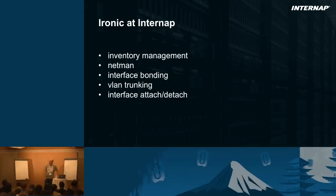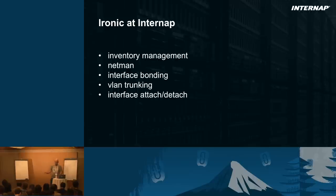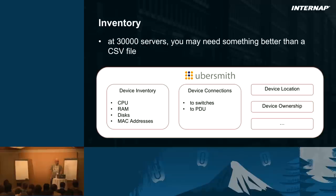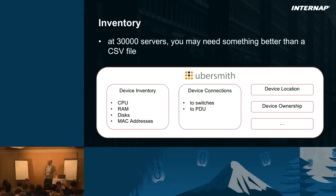Interface bonding allows customers a better experience in terms of reliability, and VLAN trunking gives usability with multiple networks. We also cover attach-to-detach. On inventory: if you have 30,000 servers, you may need something better than a CSV file. At Internap, we have Ubersmith — an ERP system that already knows about all the servers we have in all these facilities. It knows what's in the server and what it's connected to. With just these two facts, this is almost enough to properly operate the Ironic cloud.